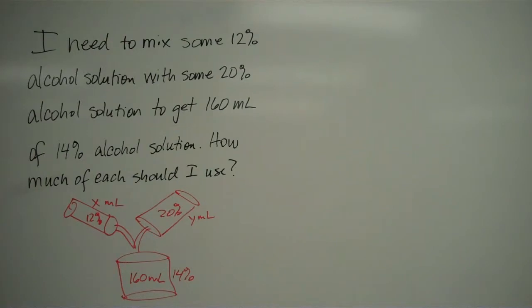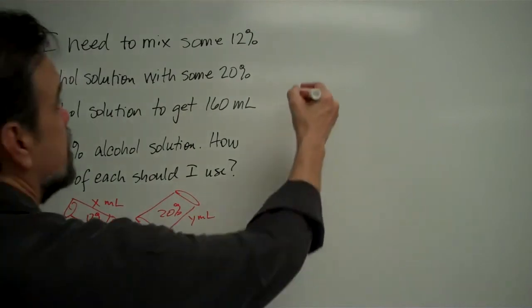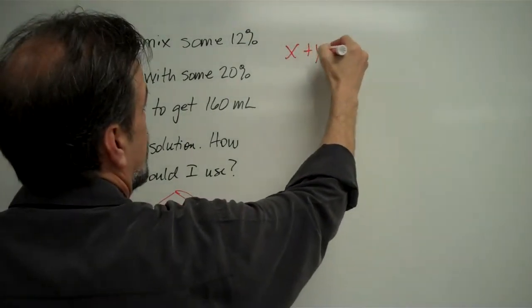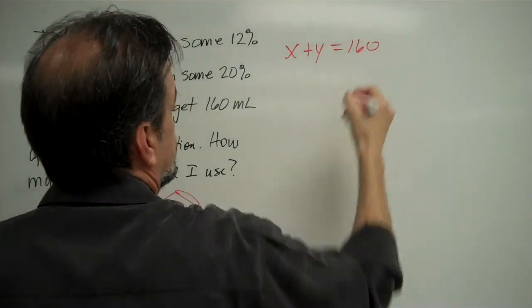Okay, now what? Well, we can tell that if I take x milliliters, and I pour it in with y milliliters, I get 160 milliliters. So that's a good place to start. x plus y equals 160.